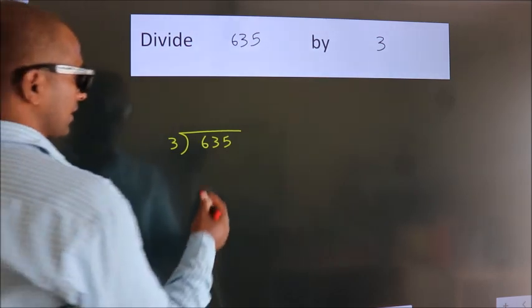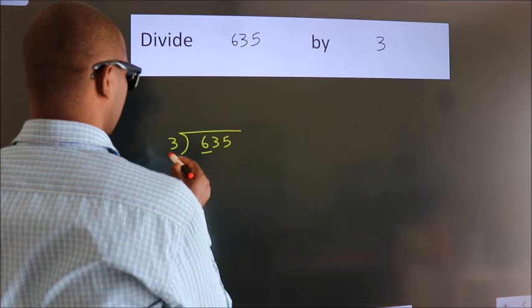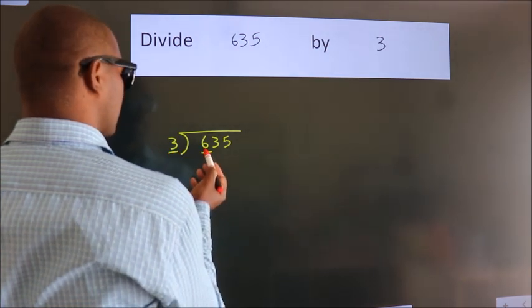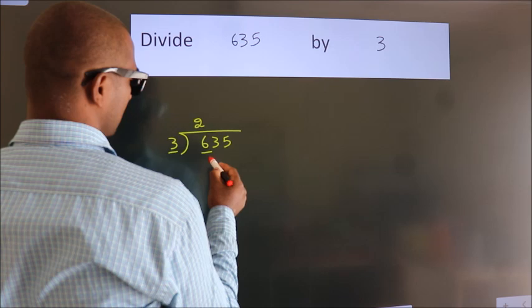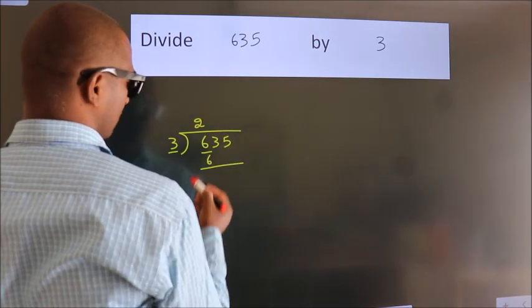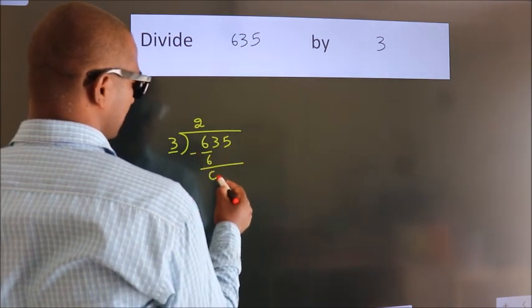Next. Here we have 6, here 3. When do we get 6? In the 3 table. 3 times 2 is 6. Now, we subtract. We get 0.